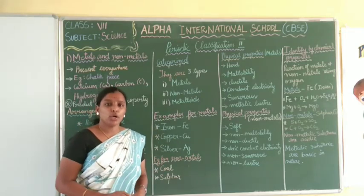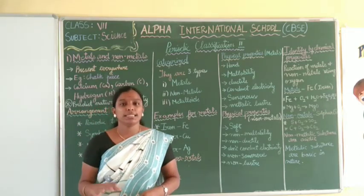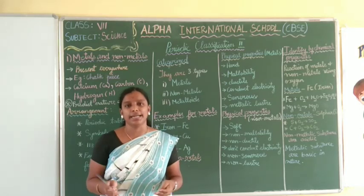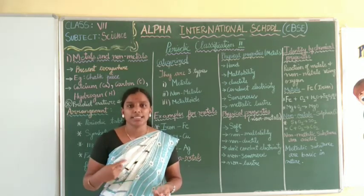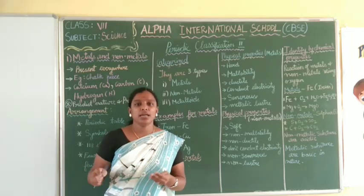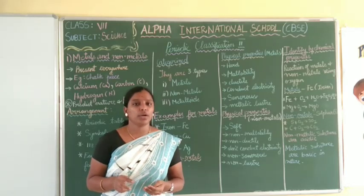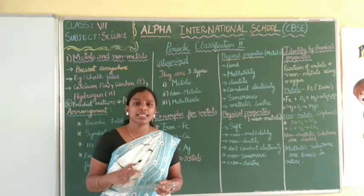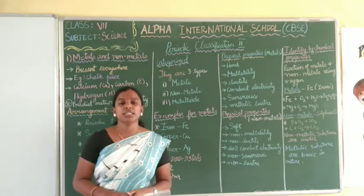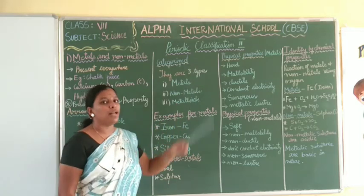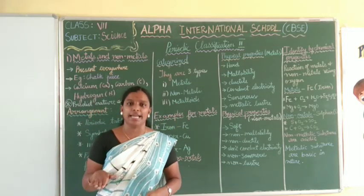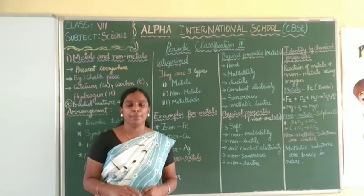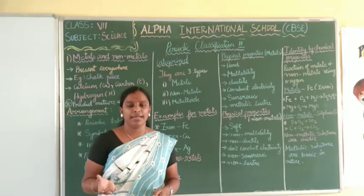This periodic classification has a history. There were many scientists who did research and made a periodic table. There were nearly 46 periodic tables before. So this is the large modern periodic table we are learning now.